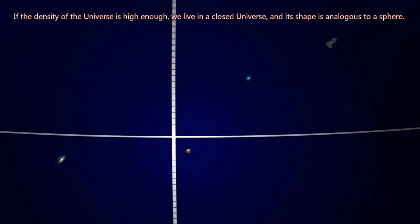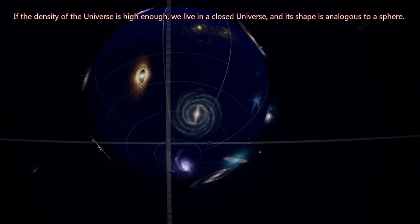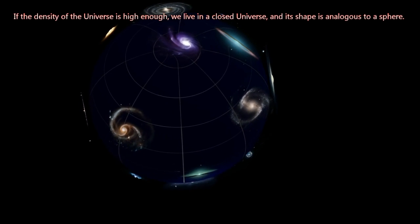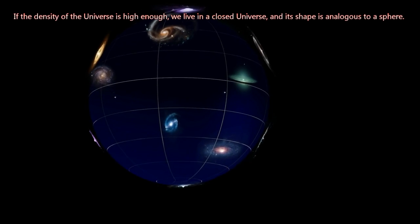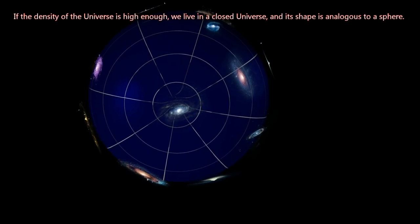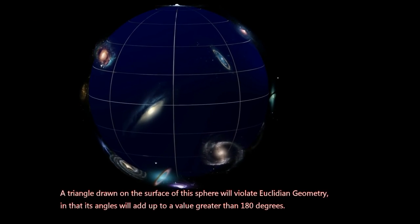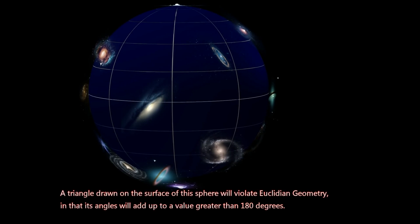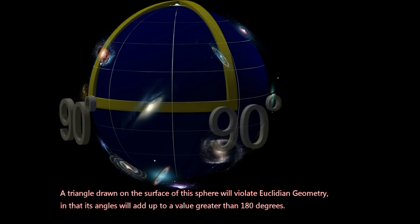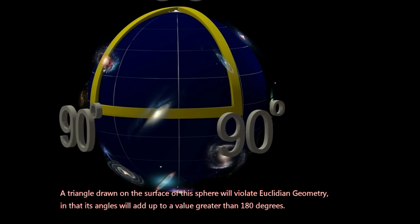If the density of the universe is high enough, we live in a closed universe, and its shape is analogous to a sphere. A triangle drawn on the surface of this sphere will violate Euclidean geometry, in that its angles will add up to a value greater than 180 degrees.